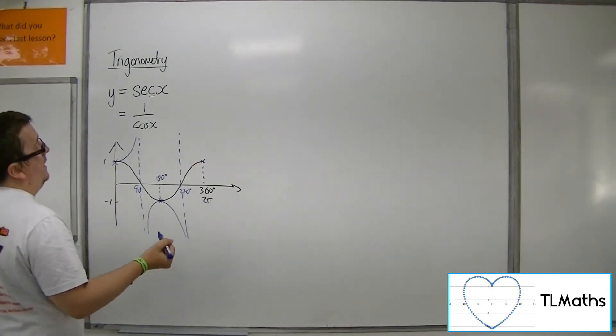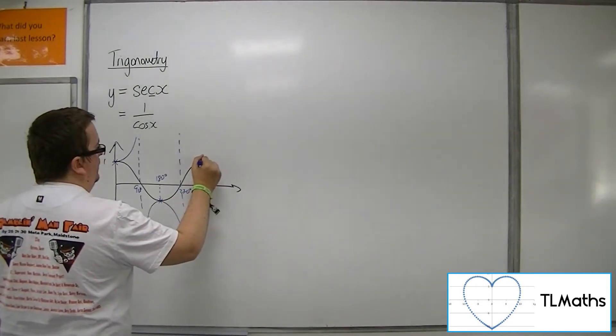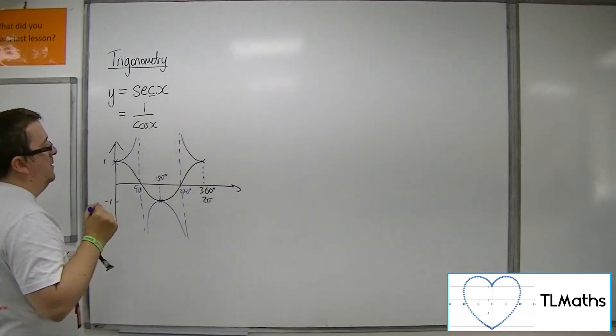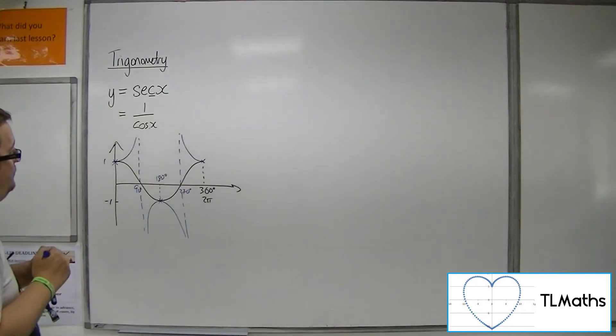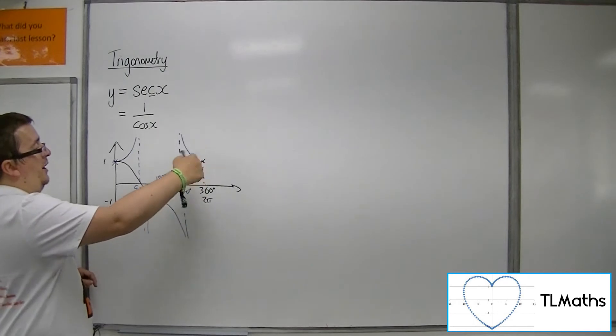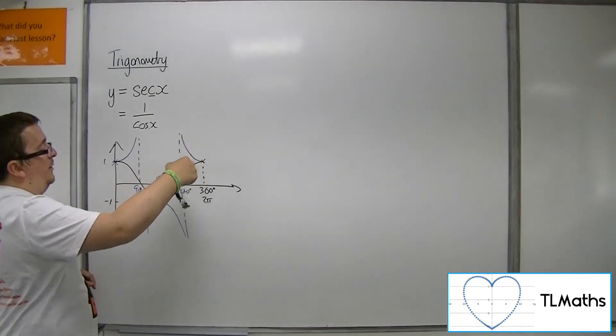Also here, cosine is 1, so 1 over 1 is 1. The sec curve must look like that. Because cosine is positive, sec must be positive as well.